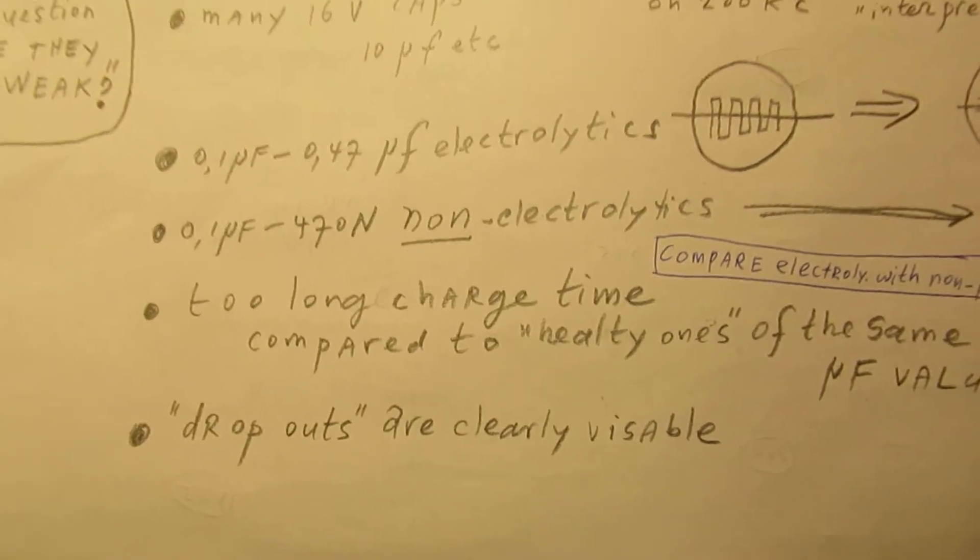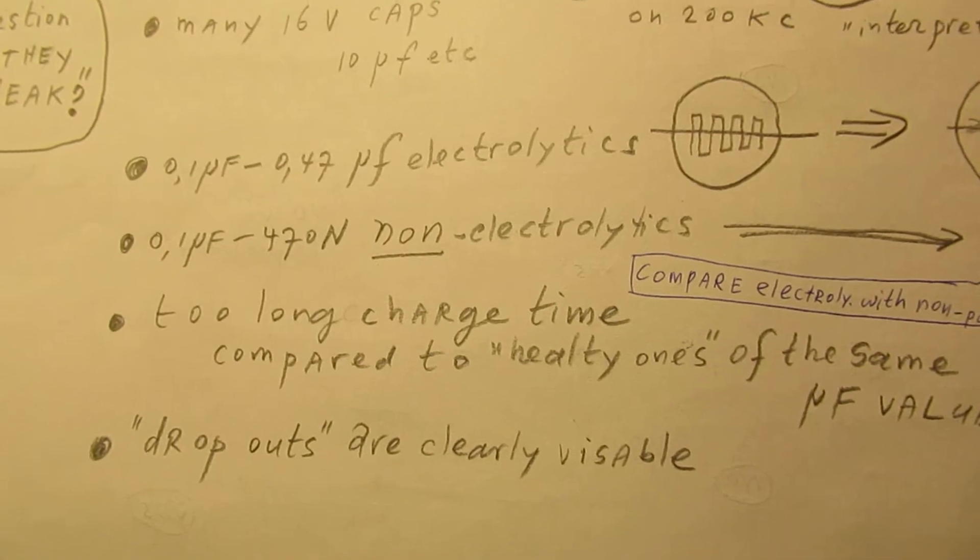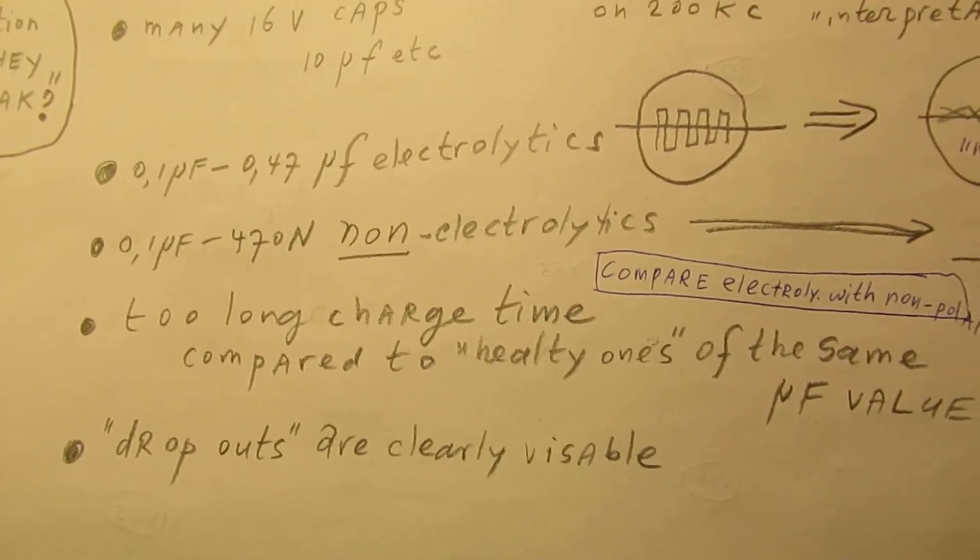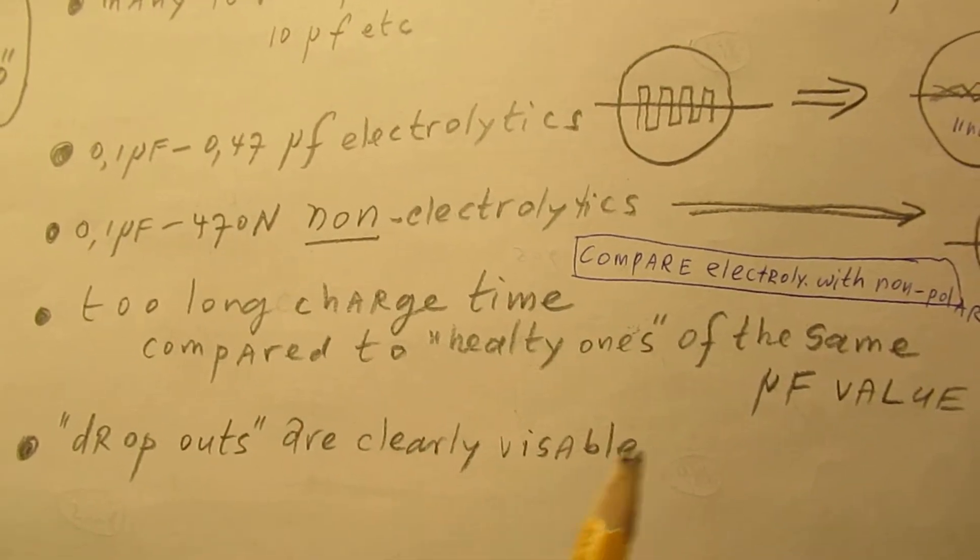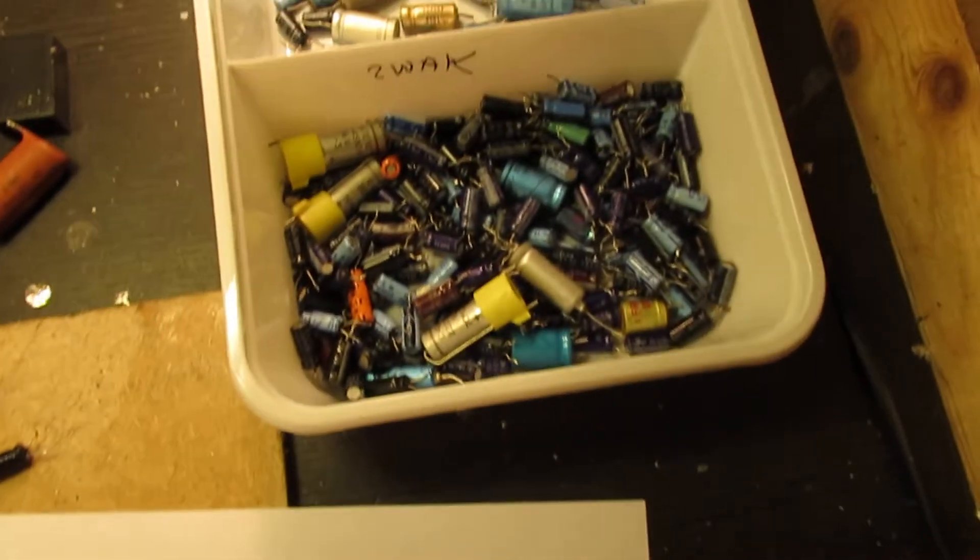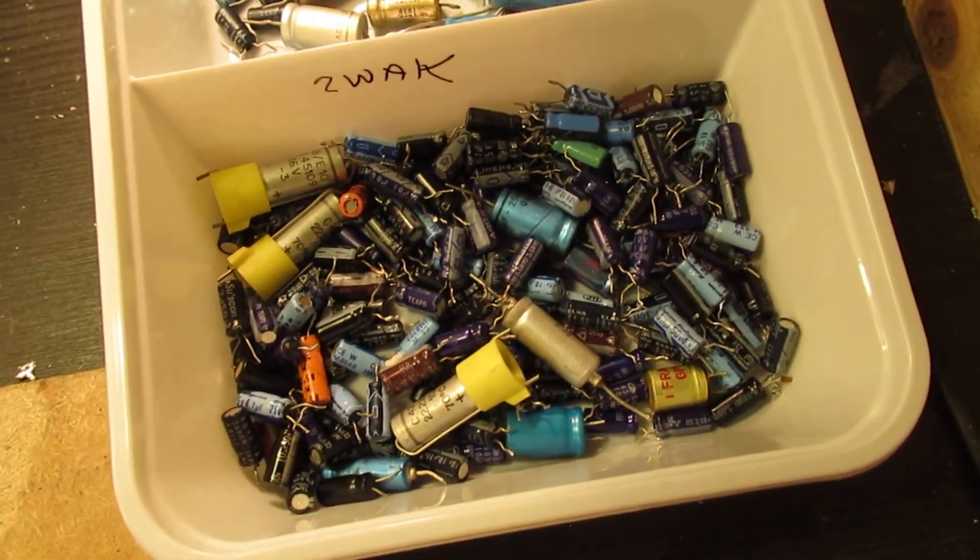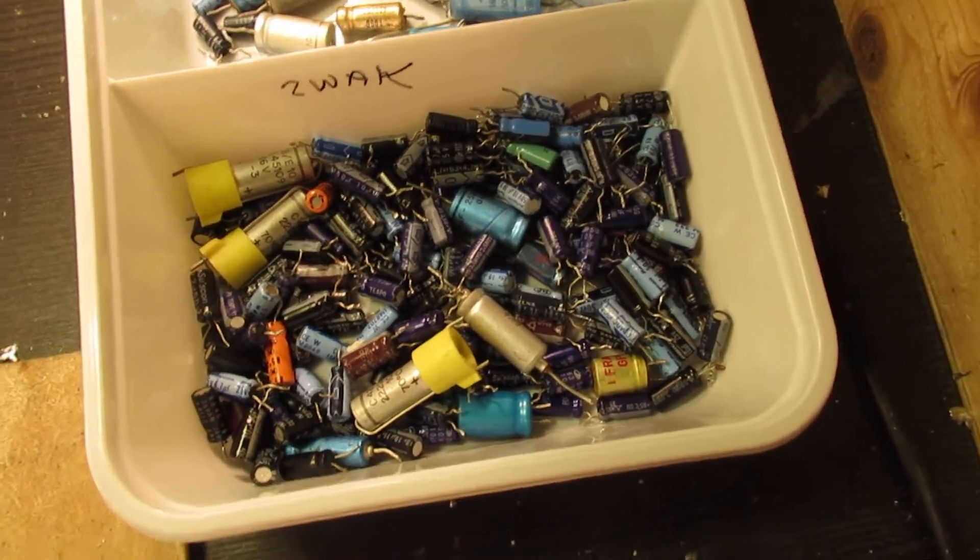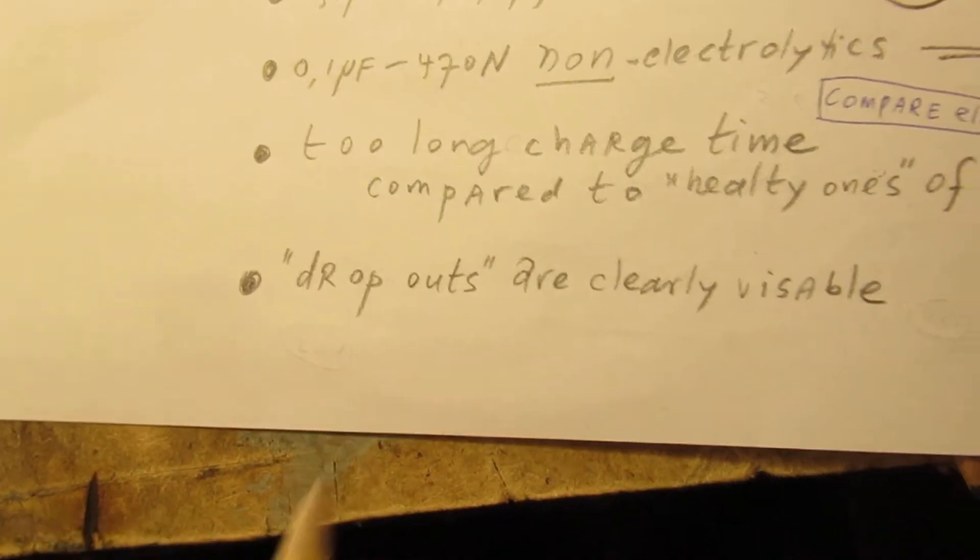It's a good idea to use a few capacitors that are fresh, recently bought, say 10 microfarad, 40 microfarad, 100 microfarad, and compare them to all the capacitors that you have perhaps stored during the past time, could be 10 years or whatever. The dropouts are clearly visible.